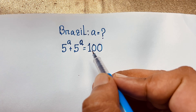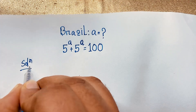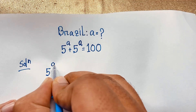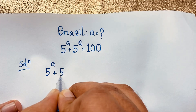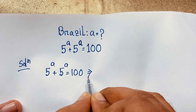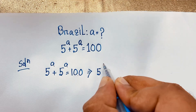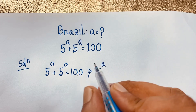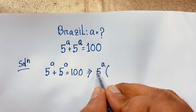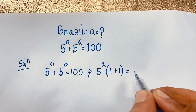I solve this question step by step. First of all, I take our question which is 5 to the power a plus 5 to the power a is equal to 100. Then 5 to the power a is common. So this divide this, it will be 1 plus this divide this — this is 1 — is equal to 100.